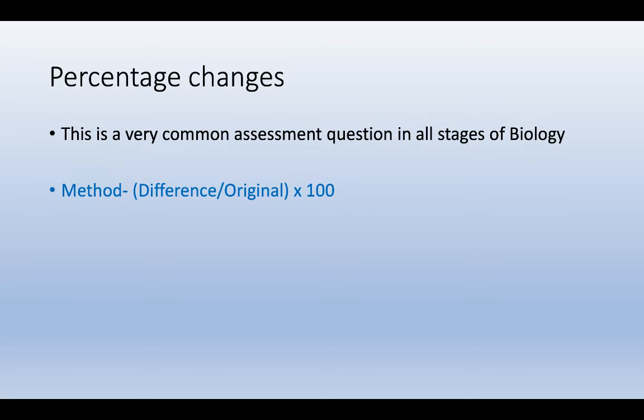Percentage changes. When we teach biology from second year all the way up to advanced higher, there's always percentage changes. It's a classic assessment question. They're really simple. There's one formula to follow: difference over original times 100. If you can remember that and repeat it and use it a couple of times in different contexts, it should become fairly straightforward.